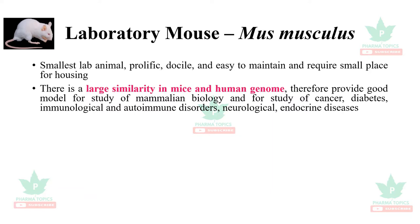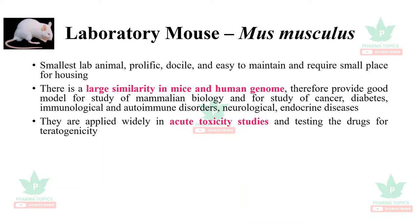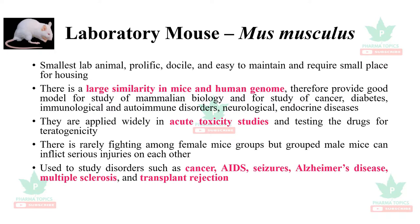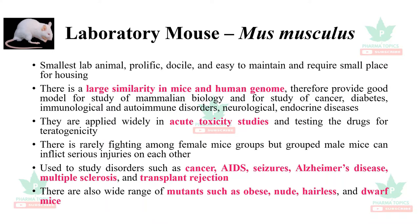Mice are widely applied in acute toxicity studies and testing of drugs for teratogenicity. There is rarely fighting among female mice groups, but grouped male mice can inflict serious injuries. They are used to study cancer, AIDS, seizures, Alzheimer's disease, multiple sclerosis, and transplant rejection. There are also a wide range of mutants such as obese mice, nude mice, hairless mice, and dwarf mice.